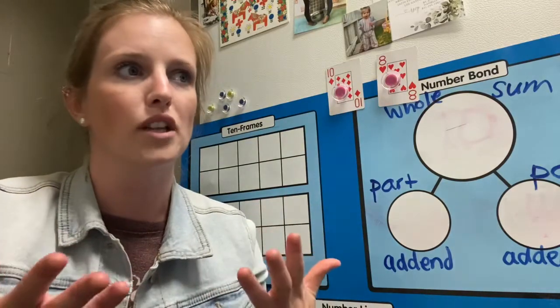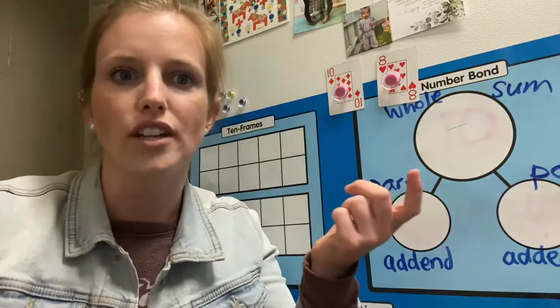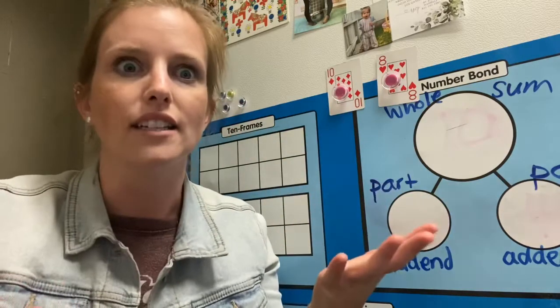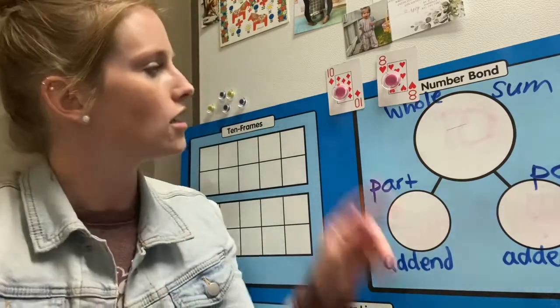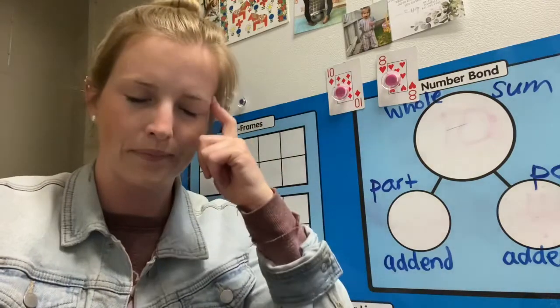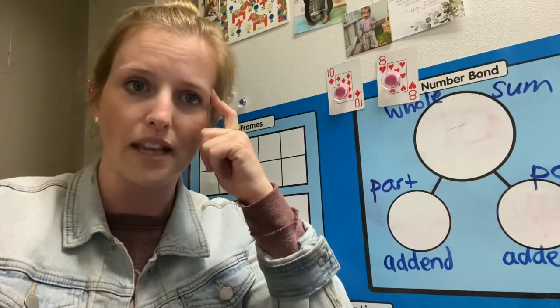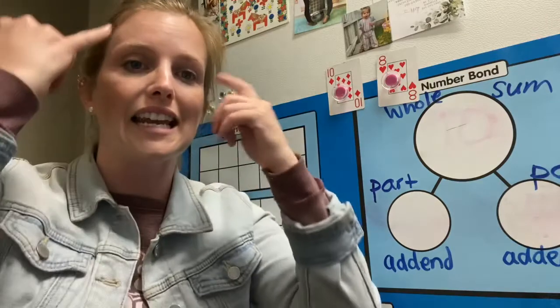So this is when you really see that counting on is a great strategy because I don't have 18 fingers to use. Okay, so put 10 in my head and I don't say 10 when I'm counting. Now I say the next number.